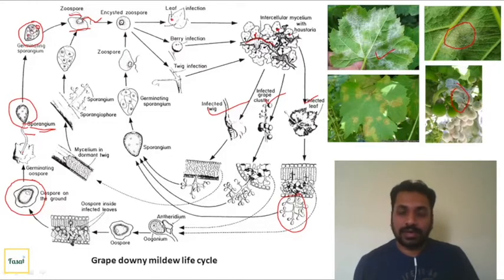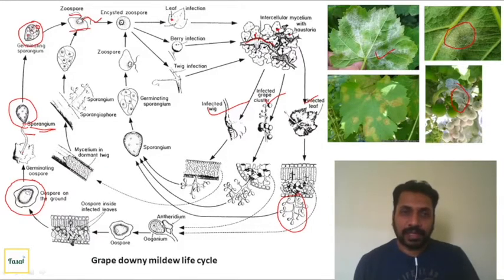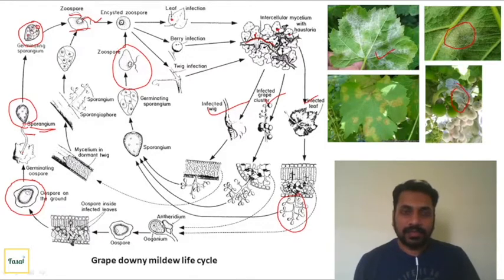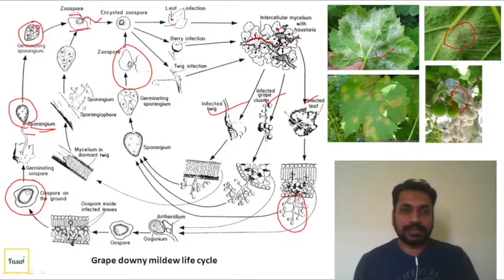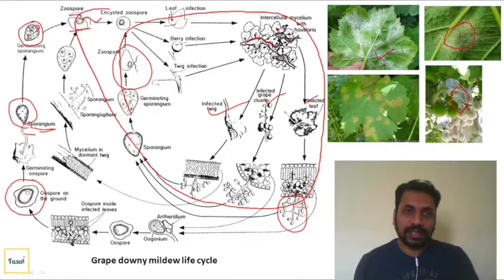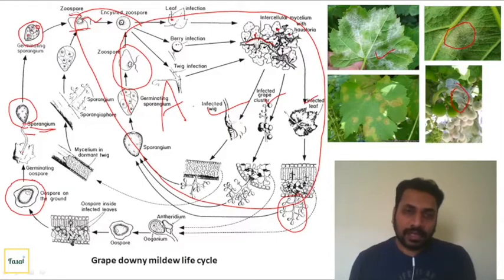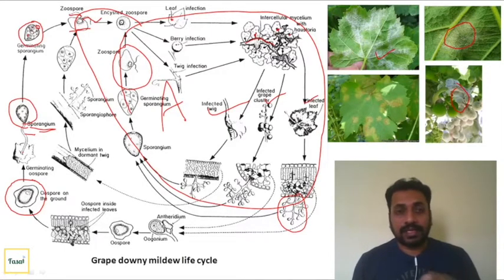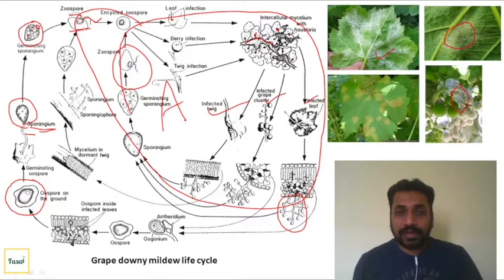The zoospore undergoes encystment again, falls or moves to another host or new leaf, and starts infection. This can be spread by wind or rain splash. Zoospores are also called motile spores because they swim through water and their movement is very fast in wet conditions - that's why the downy mildew pathogen is seen more during the rainy season. This complete cycle from oospore through zoospores back to infection is known as the asexual life cycle - the anamorphic stage of the pathogen.